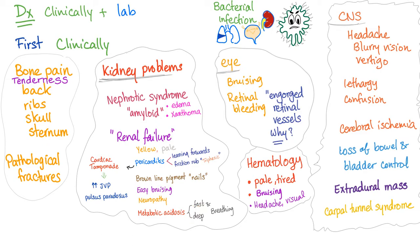In the eye, you have bruising around the eye, and the retina shows bleeding with engorged retinal vessels. The reason this happens is hyperviscosity syndrome.